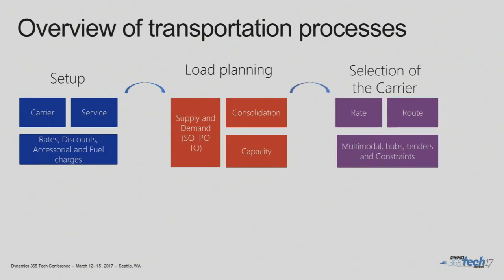The next step is carrier selection. We can map carrier contracts and rates to different carriers. After load planning, we can go in and rate and route to see which carrier should be selected for this load. This is also where multimodal processes come in — you can create route guides and route plans including multimodal deliveries. It will go through all your route plans and find the right carriers. We won't demo that today.